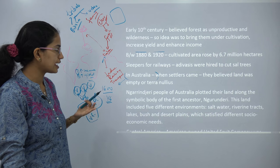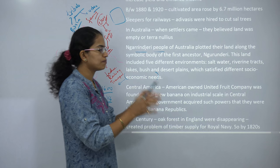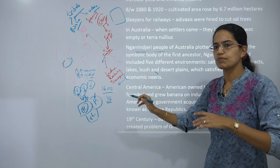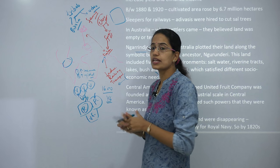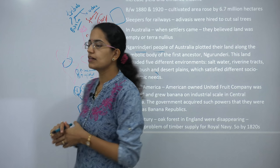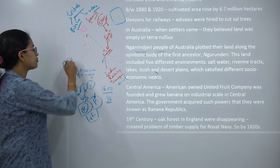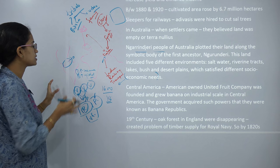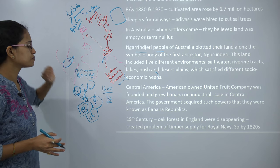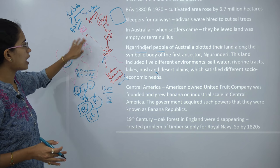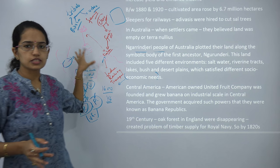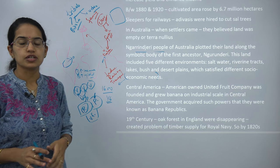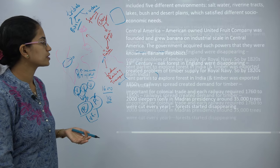Once deforestation was occurring, it would automatically have its impact on the economy. A similar example was in the Central American region, known as banana republics. An American company, United Fruits Company, grew bananas for industrial use, requiring lots of banana plantation, which is why the region came to be known as banana republics. Similarly, as the oak was disappearing from Britain, they required wood from other areas and explored new lands across the world. Britishers came to India and explored the timber resources there.